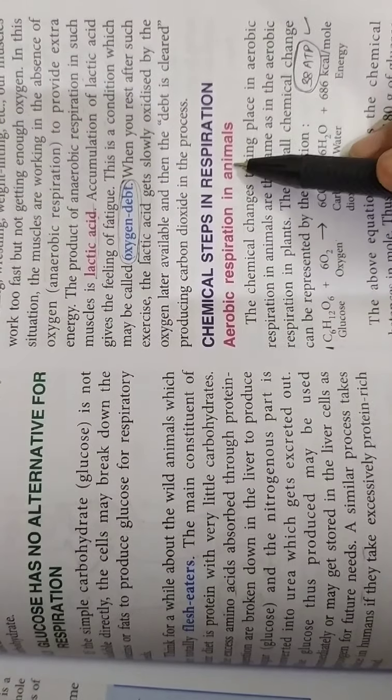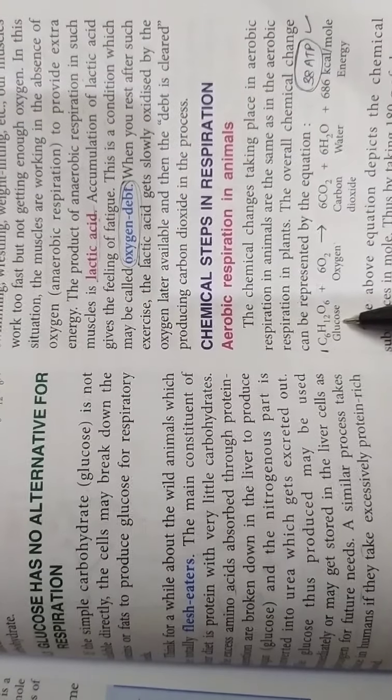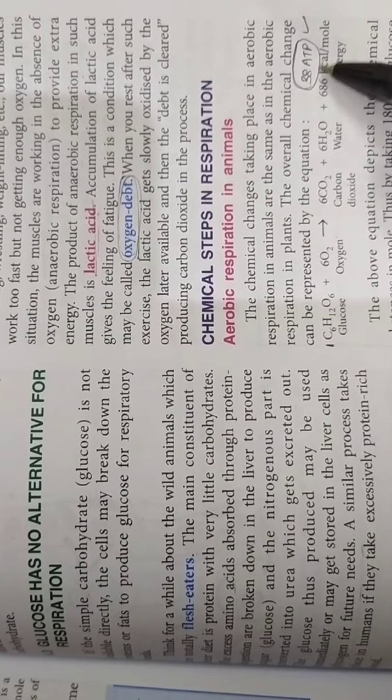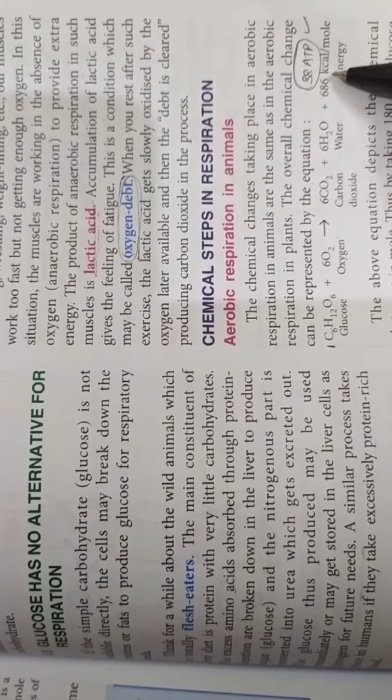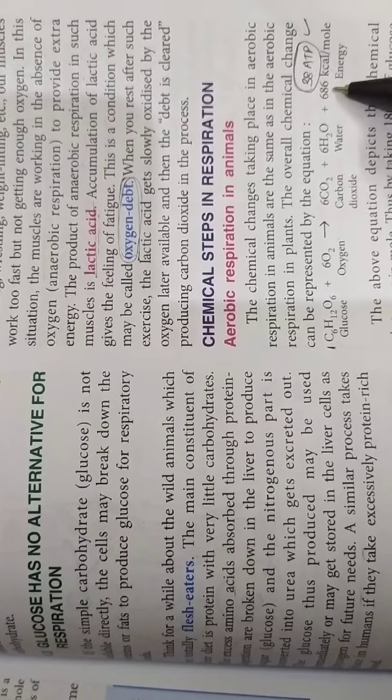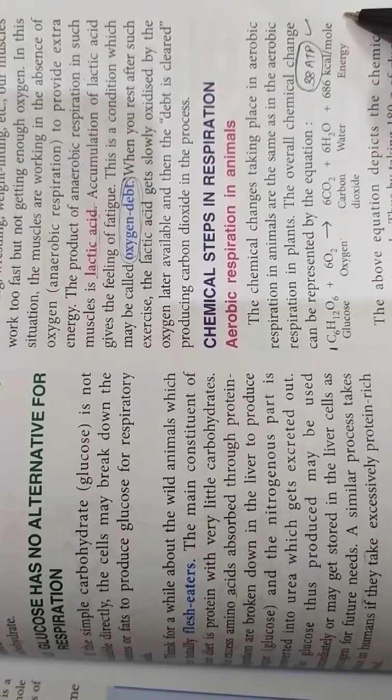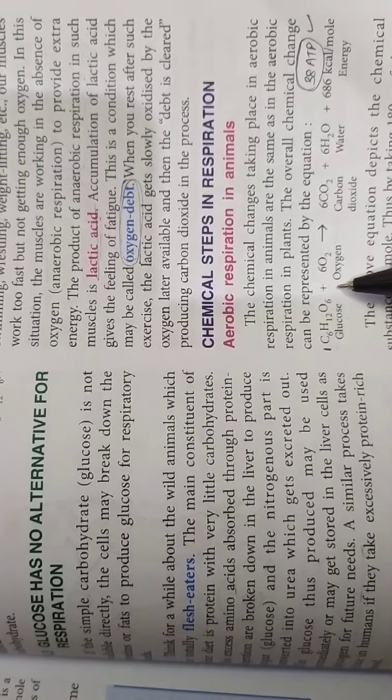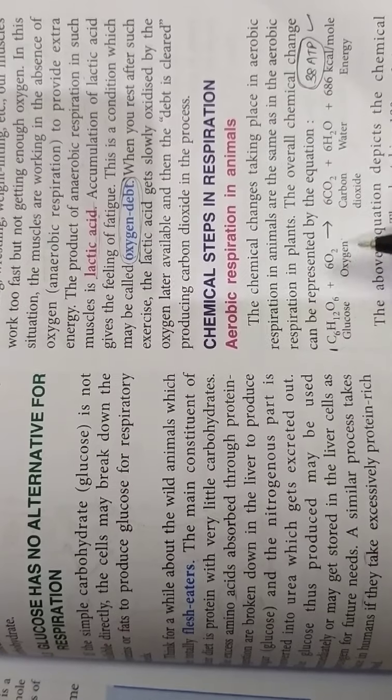They have given two equations. This is aerobic respiration in animals. As I told you, one molecule of glucose will produce 38 ATP. Or you can also write in other words as 686 kilocalories of energy is produced by the oxidation of one glucose molecule in the cells.